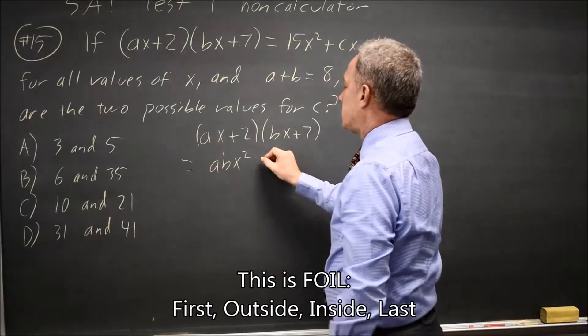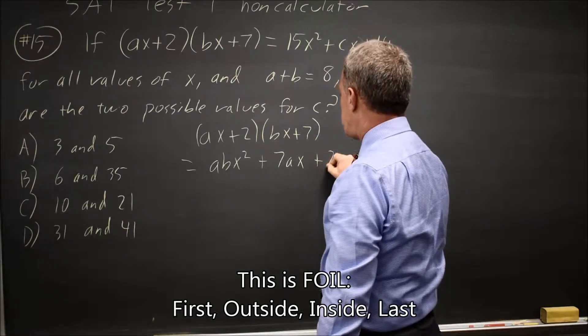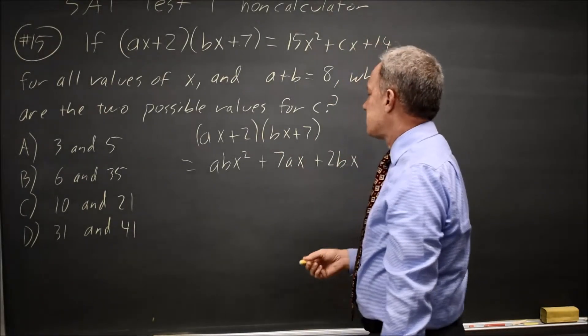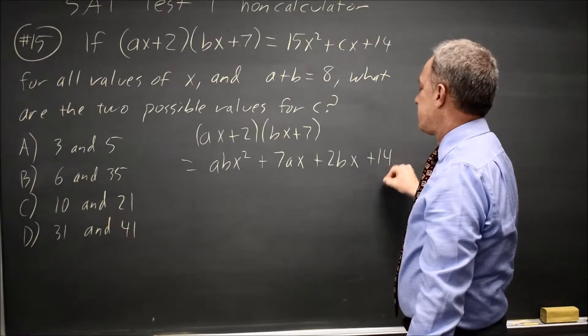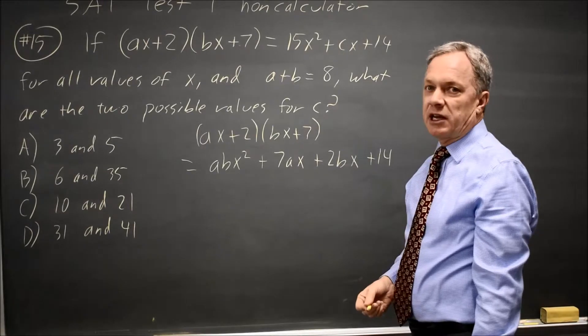plus 7AX, that's the outside, plus 2BX, that's the inside, plus 14, that's the last. So AB has to be 15 and A plus B equals 8.